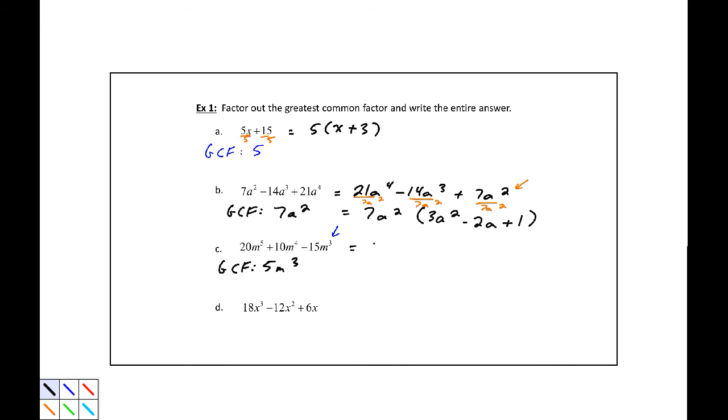So that our answer is 5m cubed, parentheses. Divide each one of those by 5m cubed. It's not part of our answer, but I want to think through that. 20m to the fifth divided by 5m cubed would be 4m squared. 10m to the fourth divided by 5m cubed would be 2, so plus 2m. Negative 15m cubed divided by 5m cubed would be minus 3. So our answer is 5m cubed, parentheses, 4m squared plus 2m minus 3.